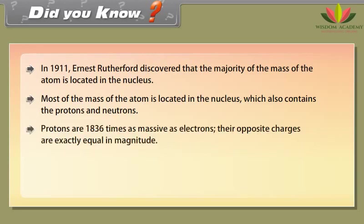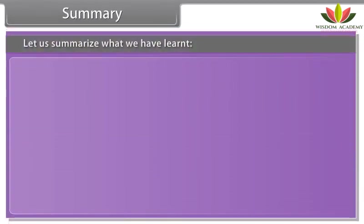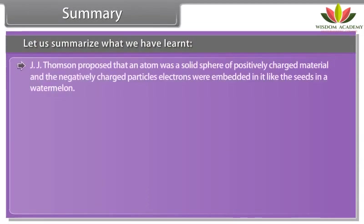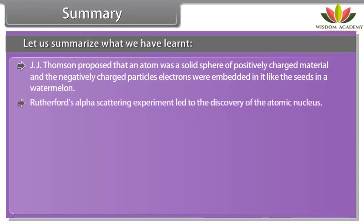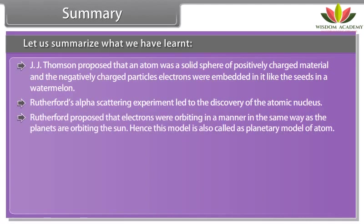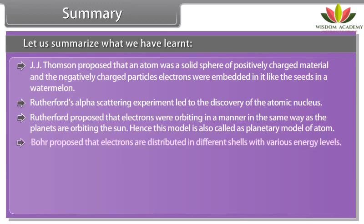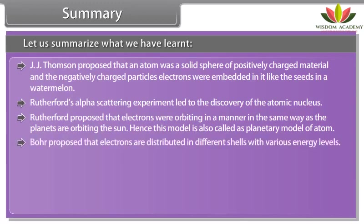Did you know? In 1911, Ernest Rutherford discovered that the majority of the mass of the atom is located in the nucleus. Most of the mass of the atom is located in the nucleus which also contains the protons and neutrons. Protons are 1836 times as massive as electrons. Their opposite charges are exactly equal in magnitude. Electrons cannot make a smaller orbit around the nucleus because as quantified by Heisenberg's uncertainty principle, the wave-like nature of the electron prevents it from being confined to a smaller area.